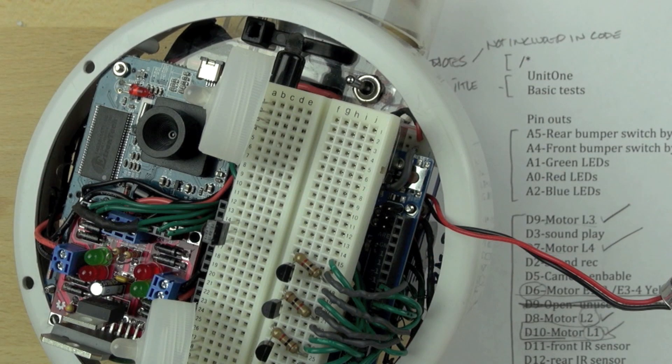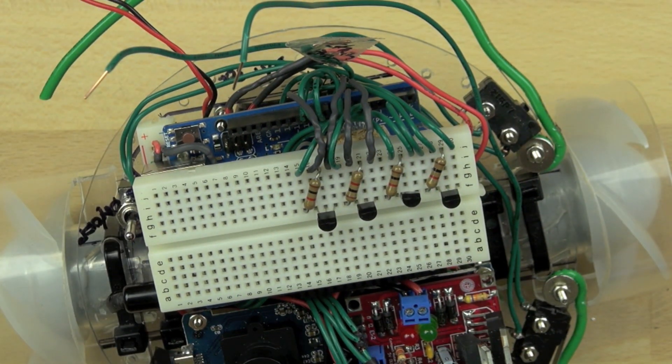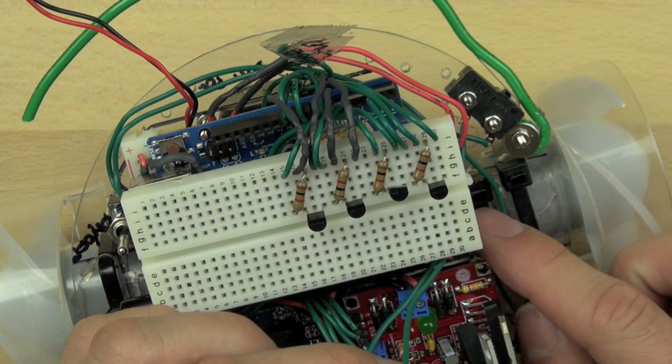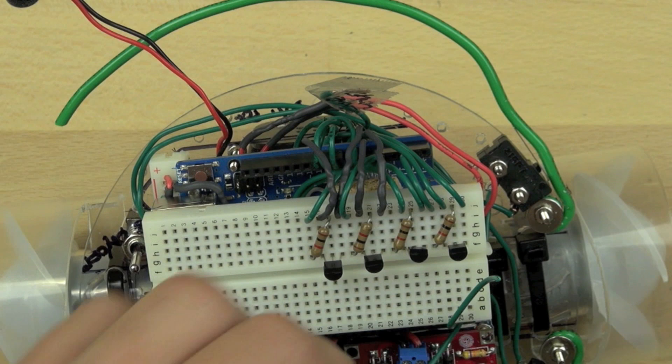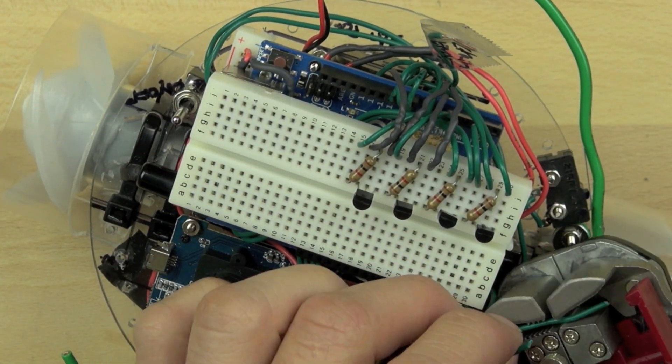Now we're going to take a look at the initial sketch for our code. Our bumper switches are A5 and A4. The rear is the A5 and the front one is the A4. So those are the analog five and four connections. That's around the other side of our breadboard there, between rows 24 and 30 on the breadboard.